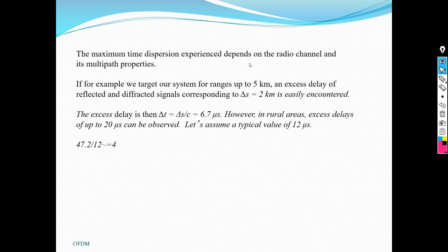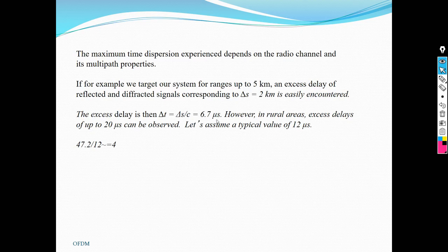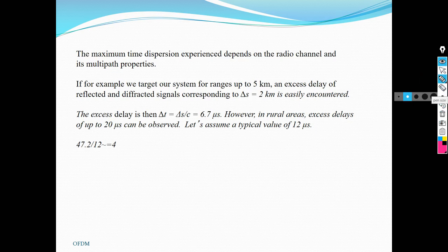The maximum time dispersion experienced depends on the radio channel and its multipath properties. For example, if we target our system for ranges up to 5 km, an excess delay of reflected and diffracted signals corresponding to delta-S equal to 2 km is easily encountered. The excess delay is then delta-S over C, which equals 6.7 microseconds. However, in rural areas, excess delays of up to 20 microseconds can be observed. Assuming a typical value of 20 microseconds, you can calculate the number of taps in your channel and accordingly design your filter or equalizer.